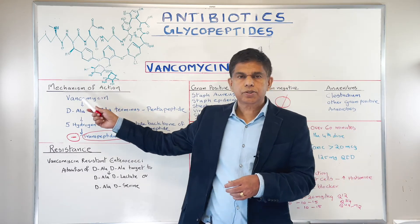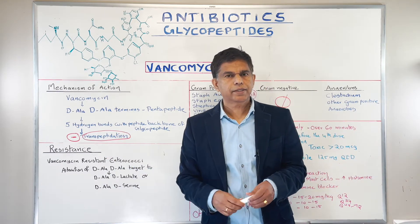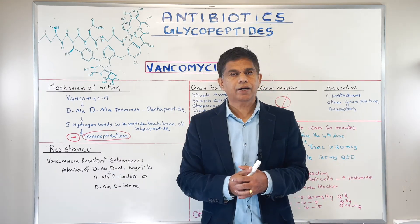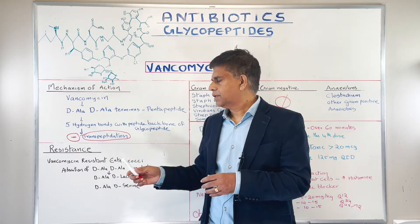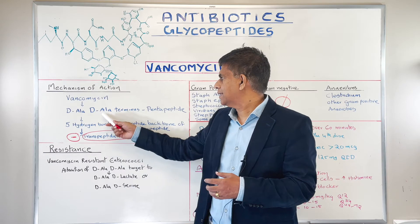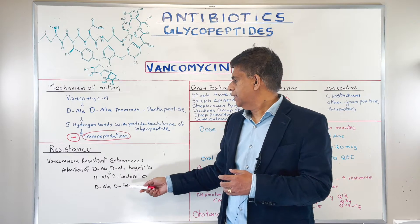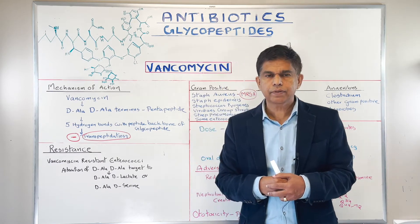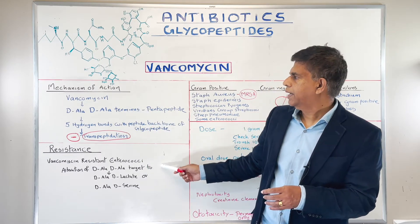The mechanism of action is very important to know for examination purposes. Now, resistance — of course resistance is developing. The main thing we need to know is VRE: vancomycin-resistant Enterococcus. How does this resistance develop? The bacteria develop resistance by alteration — instead of D-alanine D-alanine, they change it to D-alanine D-lactate or D-alanine D-serine, and those alterations help the bacteria survive the attack from vancomycin.